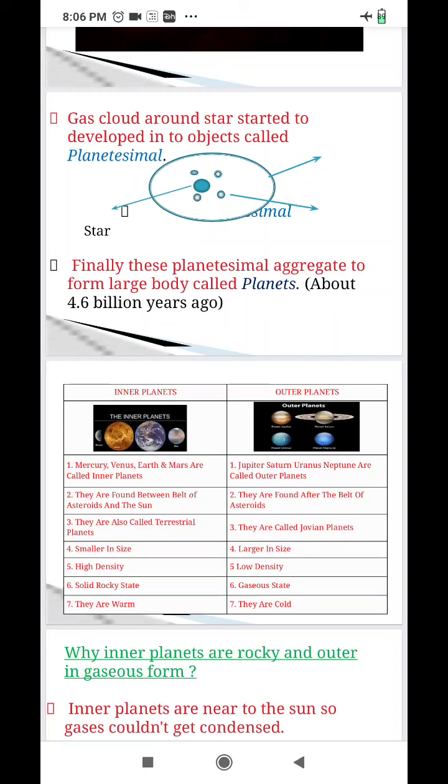As I earlier told, inner planets are solid, rocky state and outer planets are in gaseous state. As inner planets are closer to the sun, they are warm and outer planets are farther from the sun, they are cold.